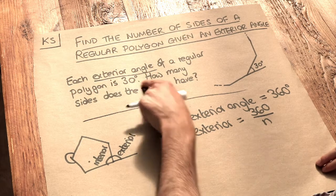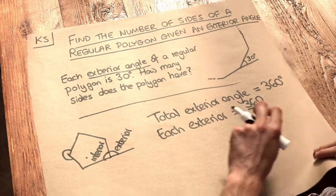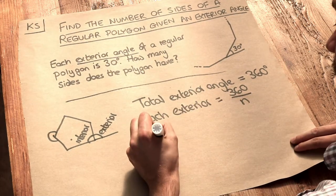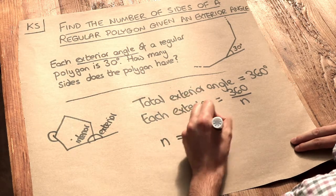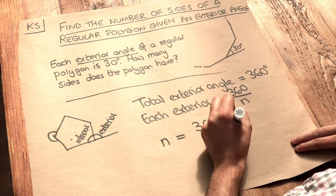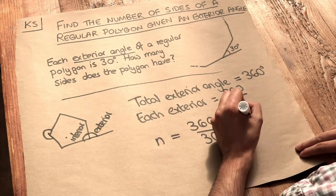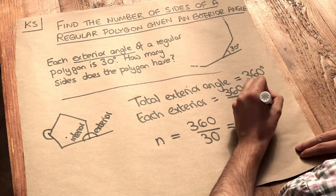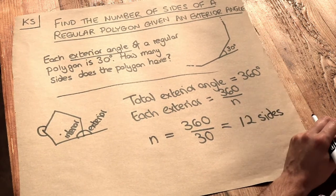Well, 360 divided by what is 30? Well, we could get that by just doing 360 divided by 30. And 360 divided by 30 is equal to 12. So the polygon is going to have 12 sides.